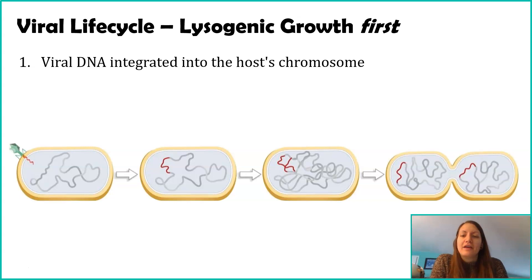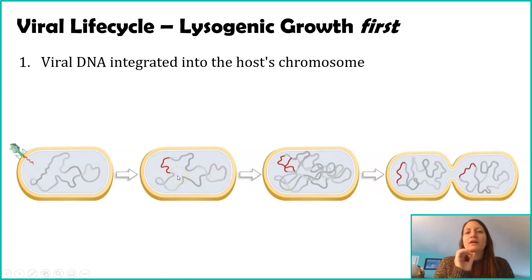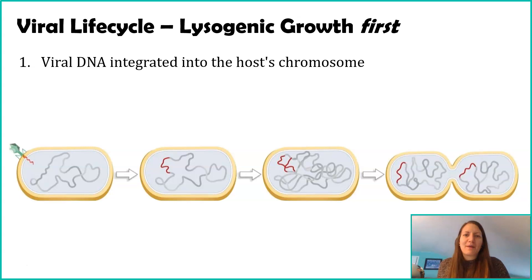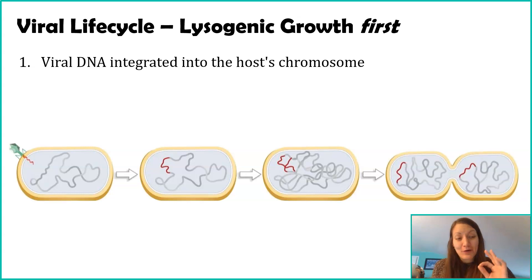So this DNA, now integrated into your DNA, gets replicated along with the cell every time that cell divides. When that cell finishes dividing, you now have two cells each with a copy of that viral DNA. That viral DNA keeps getting copied over and over again every time those cells divide.